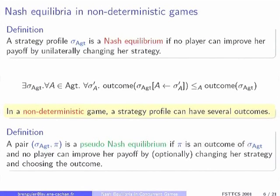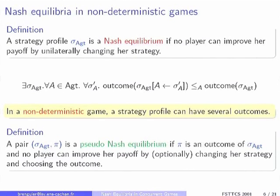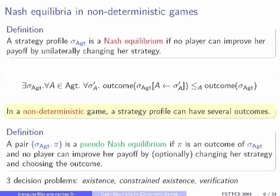Now I'm going to talk about the decision problems we have — three different ones. The simplest is existence: does there exist a Nash Equilibrium in the game? It's not always the case because we only have pure strategies. We also have constraint existence and verification problems. In verification, you give a payoff for each player — specifying which players are winning and which are losing — and you want to know if there is a Nash Equilibrium with that particular payoff. In constraint existence, you specify some players as losing, some as winning, and don't care about the rest. These three decision problems in general have the same complexity.